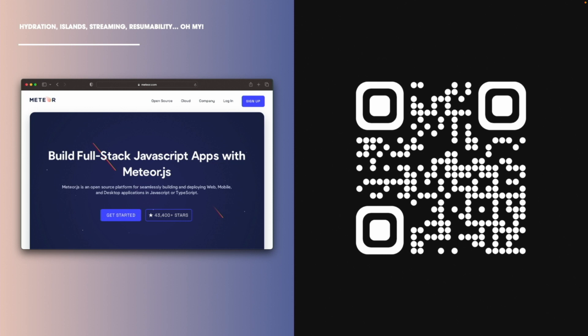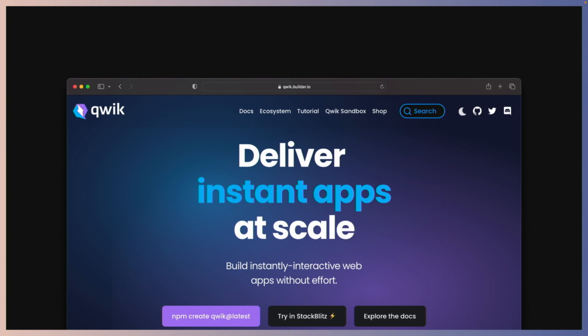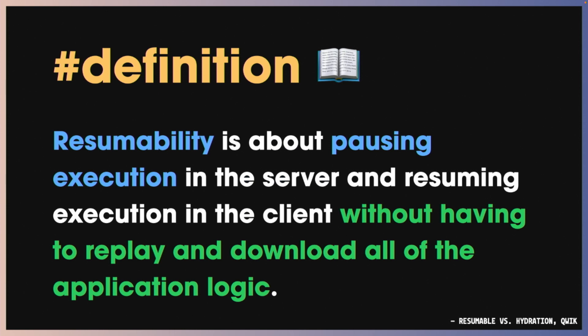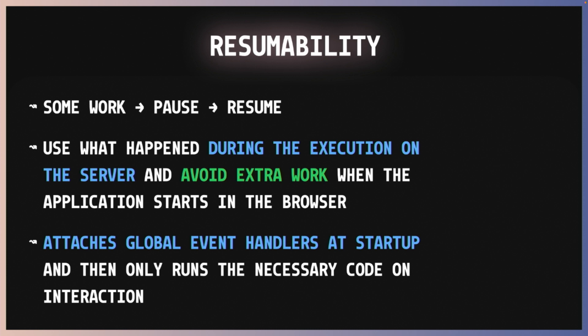And then years later we got Meteor, which in a sense had some of that, and then in 2021 we got Quick. Quick shipped with the idea of resumability, which is basically about pausing execution on the server and resuming on the client without having to replay and download the whole application logic. Do some work, pause, and then resume where you left off, using what happened during the execution on the server to avoid extra work in the client.